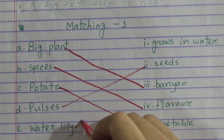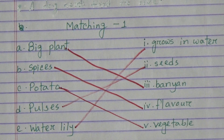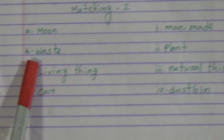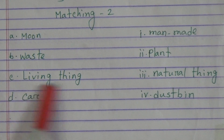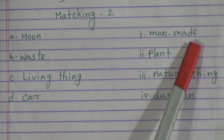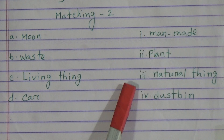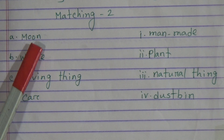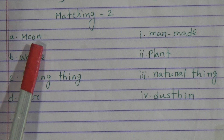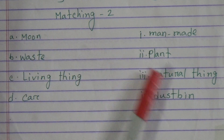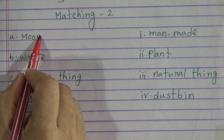Now Matching 2. On the left side: option A — moon, option B — waste, option C — living thing, option D — car. On the right side: option 1 — man-made, option 2 — plant, option 3 — natural thing, option 4 — dustbin. Option A, moon — moon is a natural thing — that means number A will be matched with number 3.